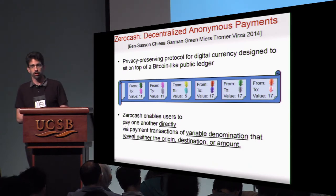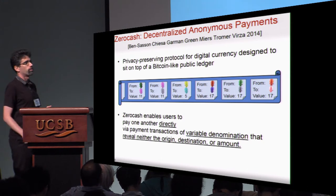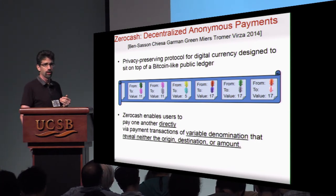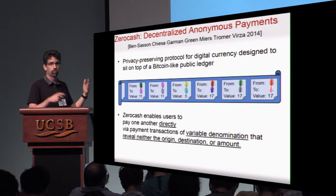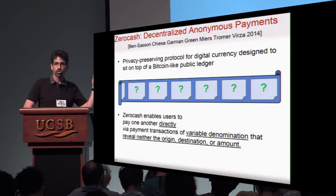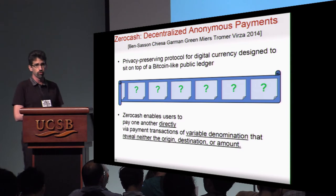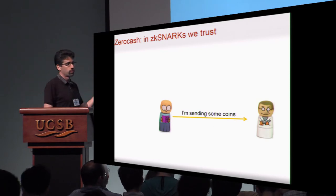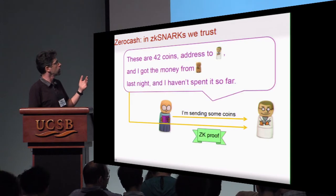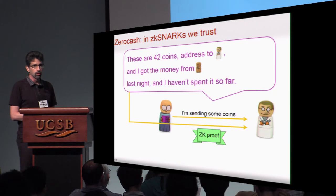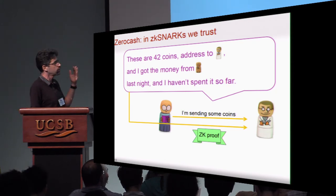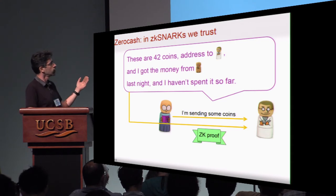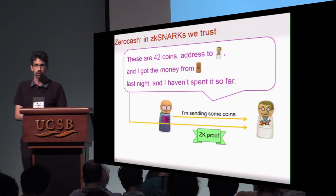One particular application of LibSNARK is Zerocash. Zerocash is a protocol we've developed for privacy-preserving cryptocurrencies, inspired by Bitcoin-like public ledgers. But unlike Bitcoin, where every transaction is posted for anyone to view and analyze, in Zerocash the blockchain contains just a bunch of pseudorandom values, ciphertext, and ZK-SNARKs. The underlying idea is that whenever a transaction happens, the sender provides a zero-knowledge proof that anyone can verify — confirming the transaction is legitimate, has a correct origin, and isn't double-spending. Anyone else can merely verify correctness, but the recipient can moreover verify that they are the intended recipient and take ownership of those funds.